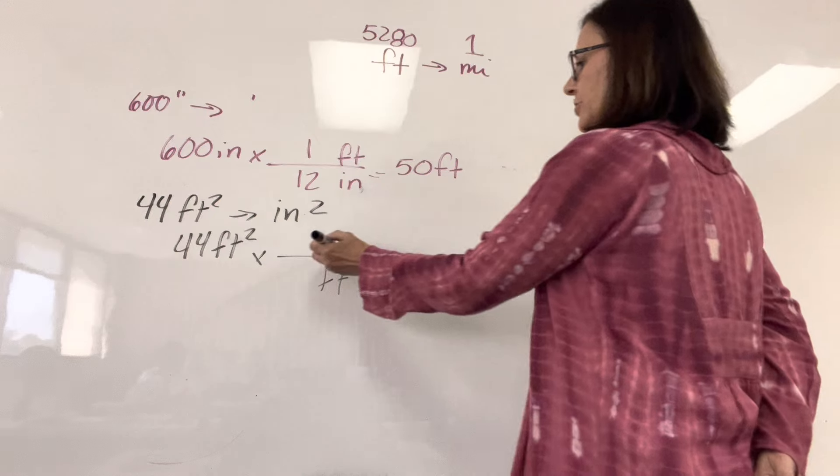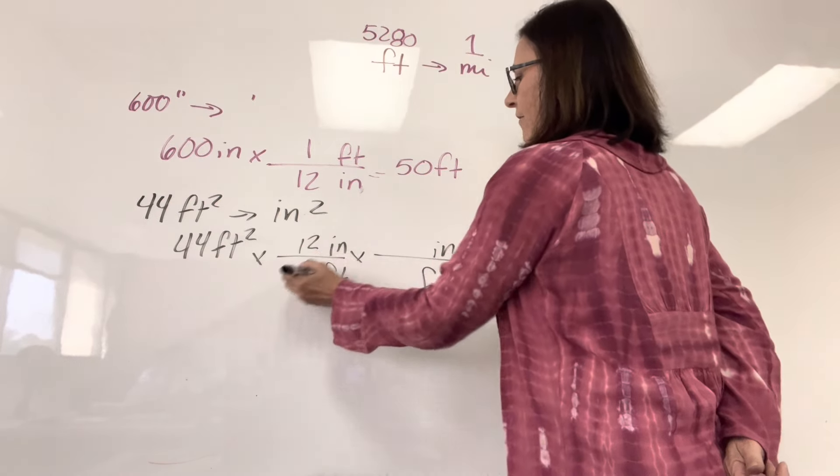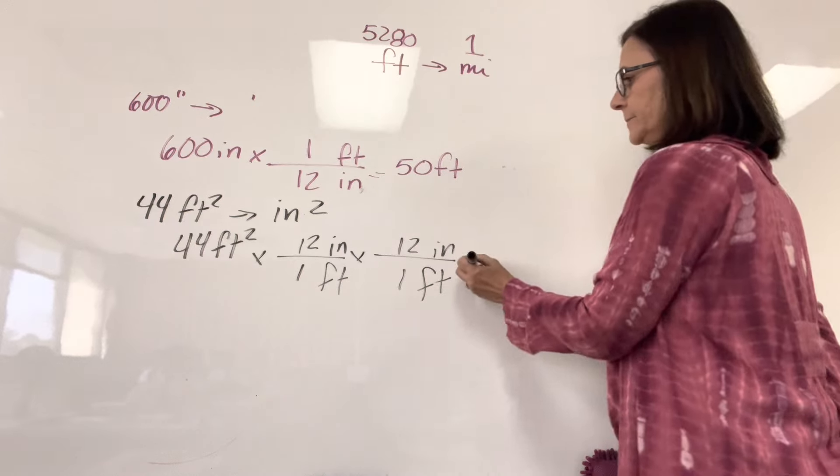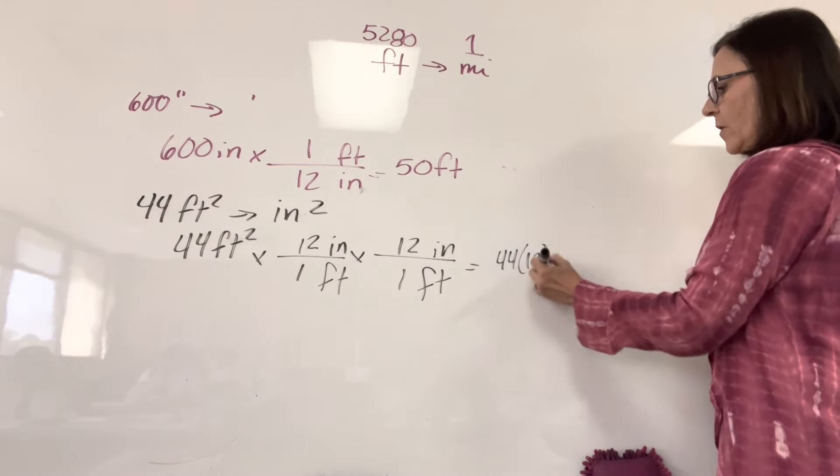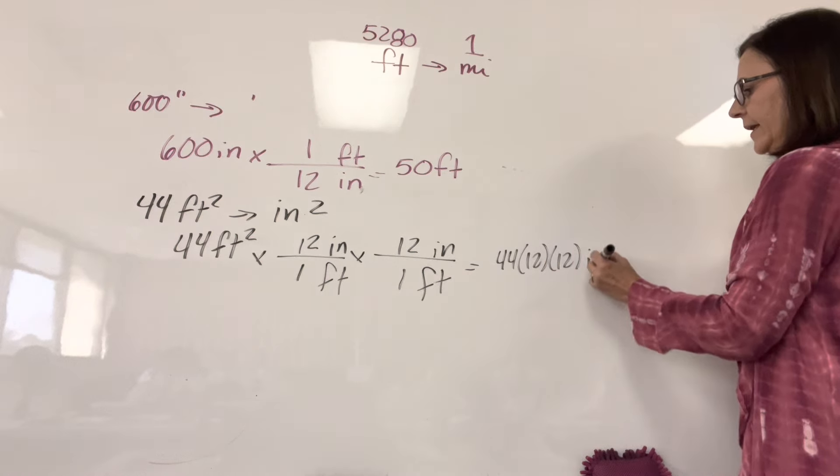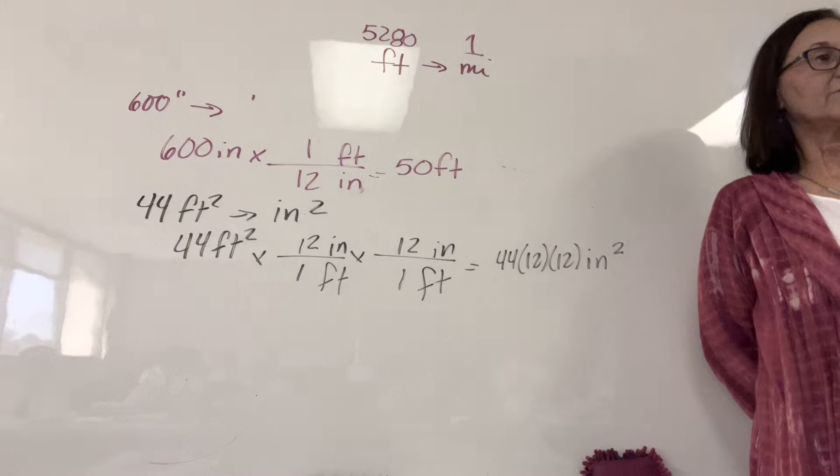Because I need feet in the denominator twice. So I need inches in the numerator twice. And we know there are 12 inches in a foot. 44. So it's 44 times 12 times 12 inches squared. It's like 6,000. You don't have to multiply them out.